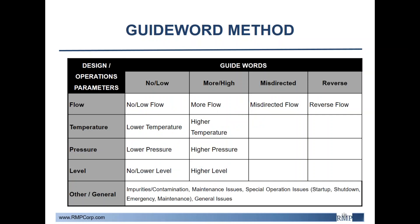In order to address these hazards, a systematic approach called the guide word technique is often used. This is accomplished by using words such as no, low, more, and high, and applying them to design parameters such as flow, temperature, pressure, and level. Combining these creates the deviation you can use to define your causes. For example, a low flow deviation can be caused by a valve being inadvertently closed.